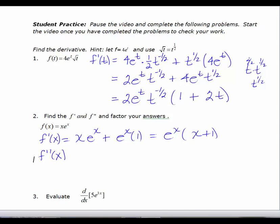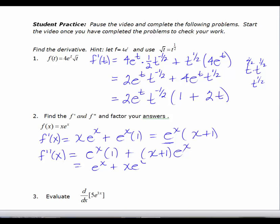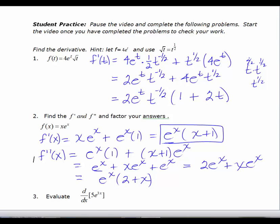For the second derivative, I take the derivative of the first derivative. So e to the x is my first function and x plus 1 is my second. First times derivative of the second — derivative of x plus 1 is 1 — plus the second, x plus 1, times derivative of the first, e to the x. Simplifying: e to the x plus xe to the x plus e to the x. Combining like terms gives 2e to the x plus xe to the x. Factoring out e to the x gives x plus 2. So that's my second derivative.